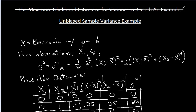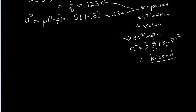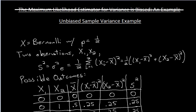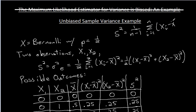This video is a continuation of the video from two times ago. I'm going to continue that example and show what happens with the new unbiased S squared. I have the paint file up here — the image from our example of the maximum likelihood estimator for the variance being biased. We saw that one was biased, but we also introduced a new unbiased sample variance: S squared equals 1 over N minus 1, times the sum from i=1 to N of (Xi minus X-bar) squared, and this ends up being unbiased.